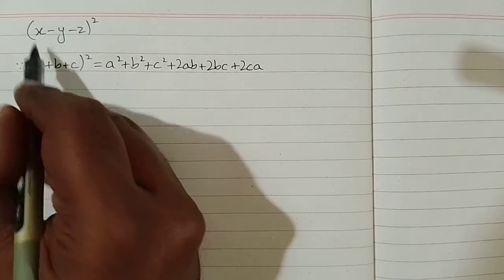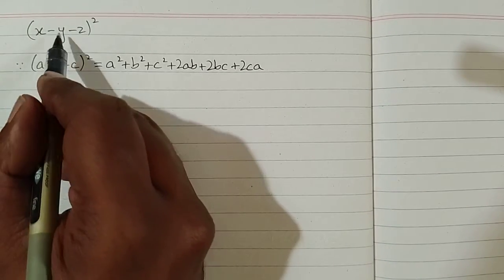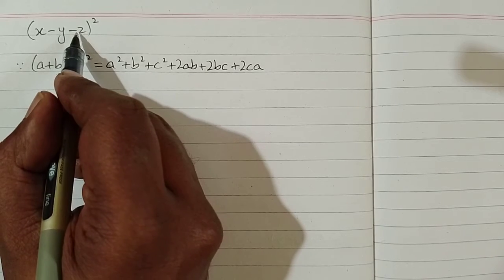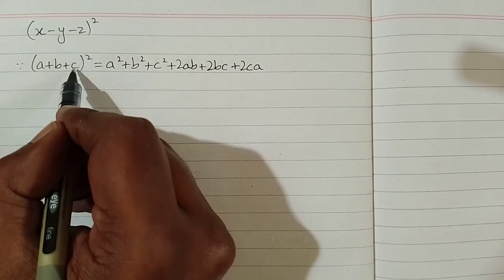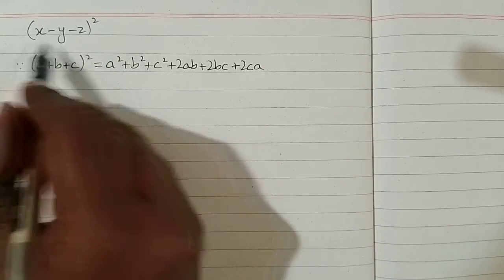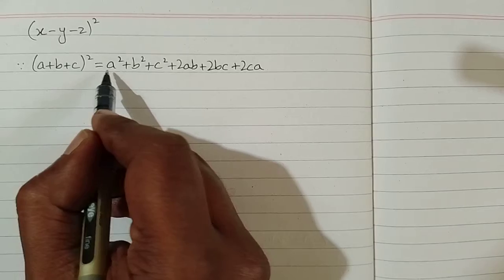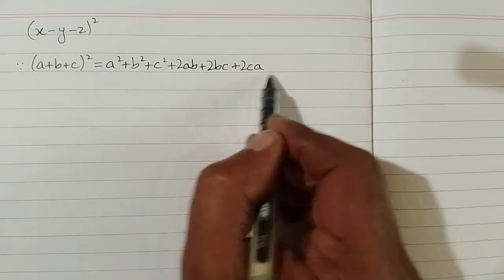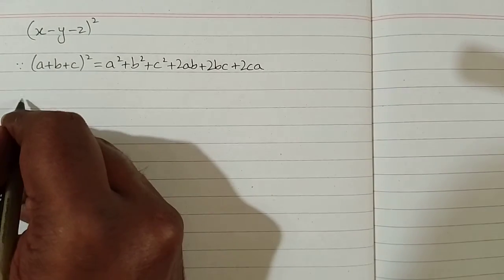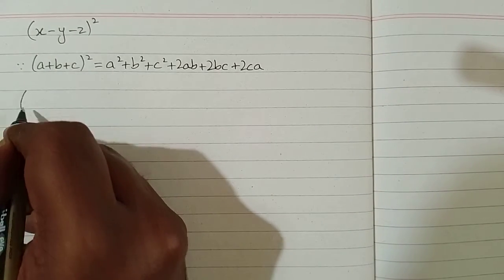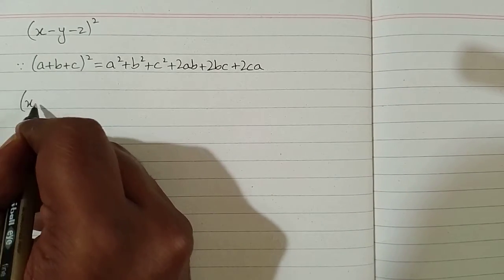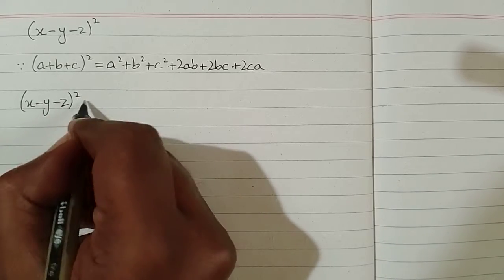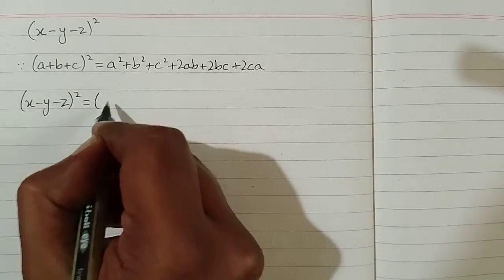We can see that we have x in place of a, minus y in place of b, and minus z in place of c. So we can put these values in place of a, b, and c in this formula.